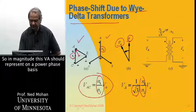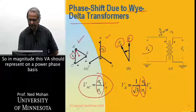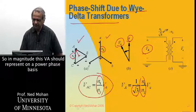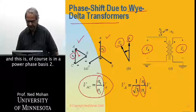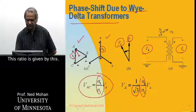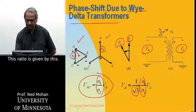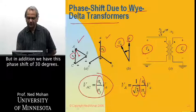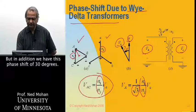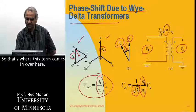So in magnitude, this VA, if you represent on a per phase basis, and this is, of course, in a per phase basis too, this ratio is given by this. But in addition, we have this phase shift of 30 degrees. So that's where this term comes in over here.